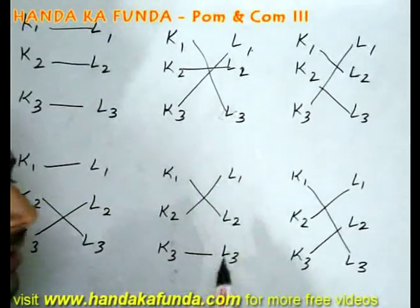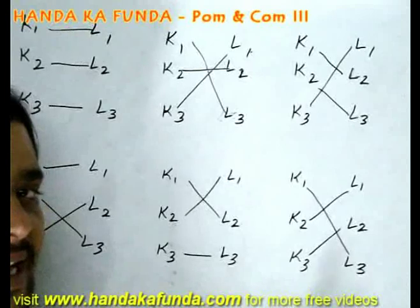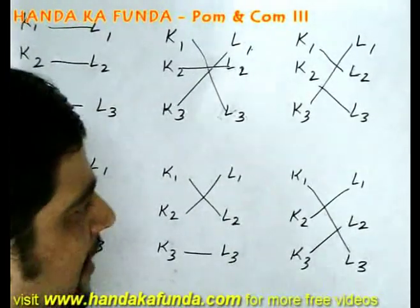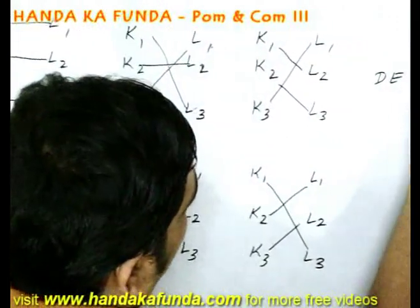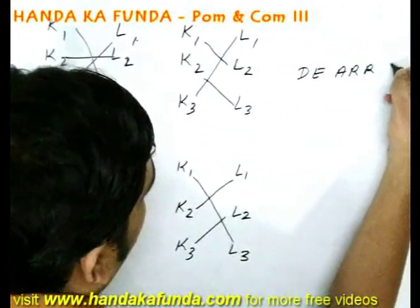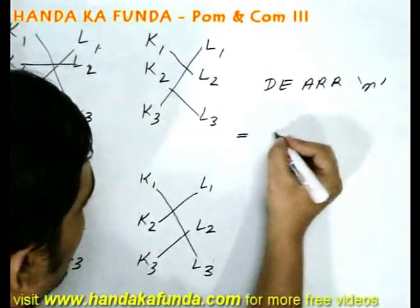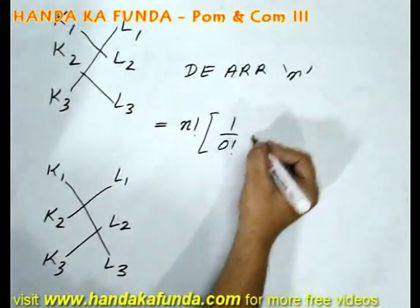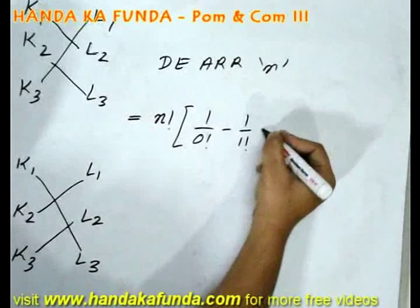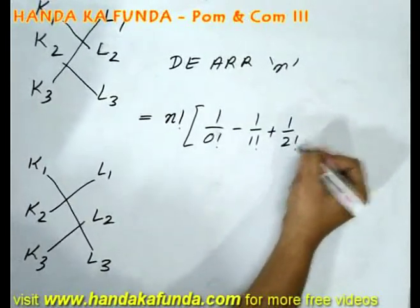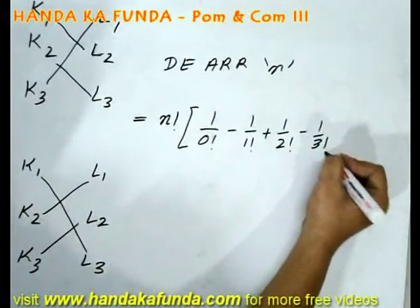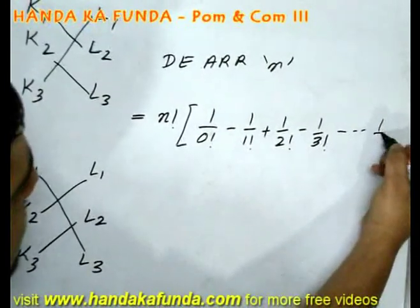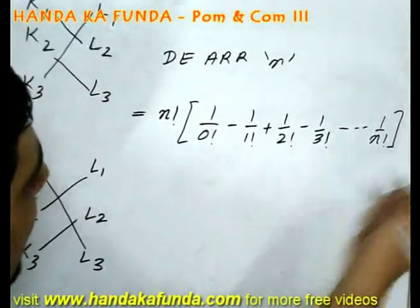When there are 3 things, 3 keys and 3 locks you can dearrange them in 2 ways but if there are n things then the formula for derangement of n is given by n factorial multiplied with 1 by 0 factorial minus 1 by 1 factorial plus 1 by 2 factorial minus 1 by 3 factorial. You will alternate plus minus plus minus till you reach the last term which will be 1 by n factorial.